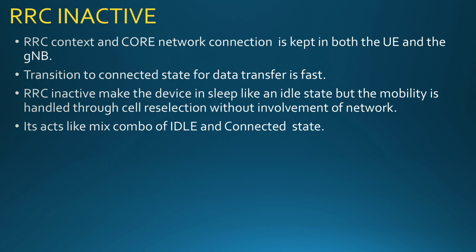In RRC Inactive state, the RRC context and the core network connection are kept in both the UE and the gNodeB. The transition to connected state for data transfer is very fast — that is the main advantage of RRC Inactive. The device is in a sleep-like idle state, but mobility is handled through cell reselection without network involvement. It is essentially a combination of both idle and connected states, improving UE efficiency.